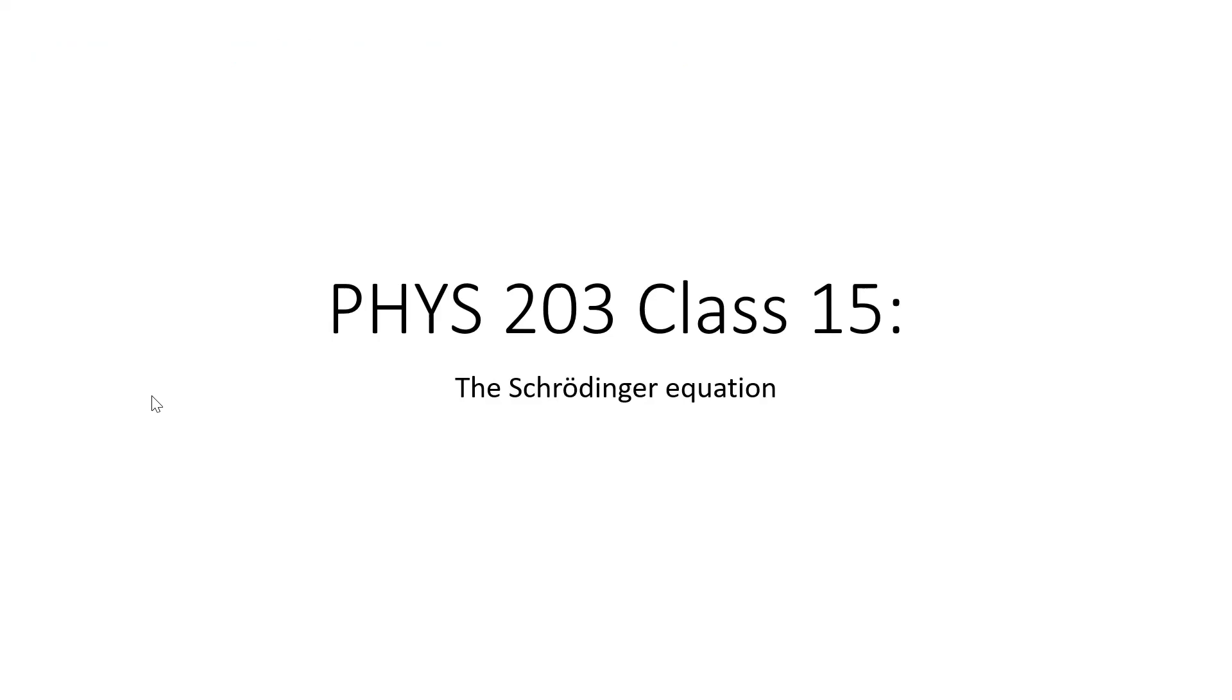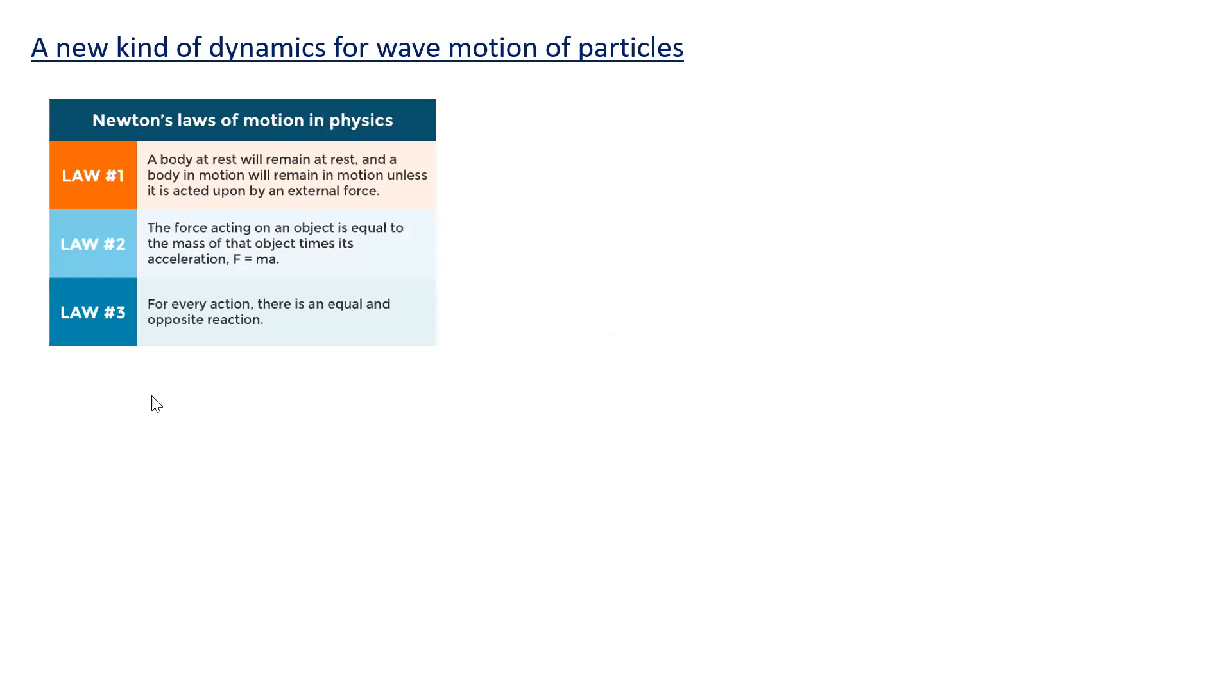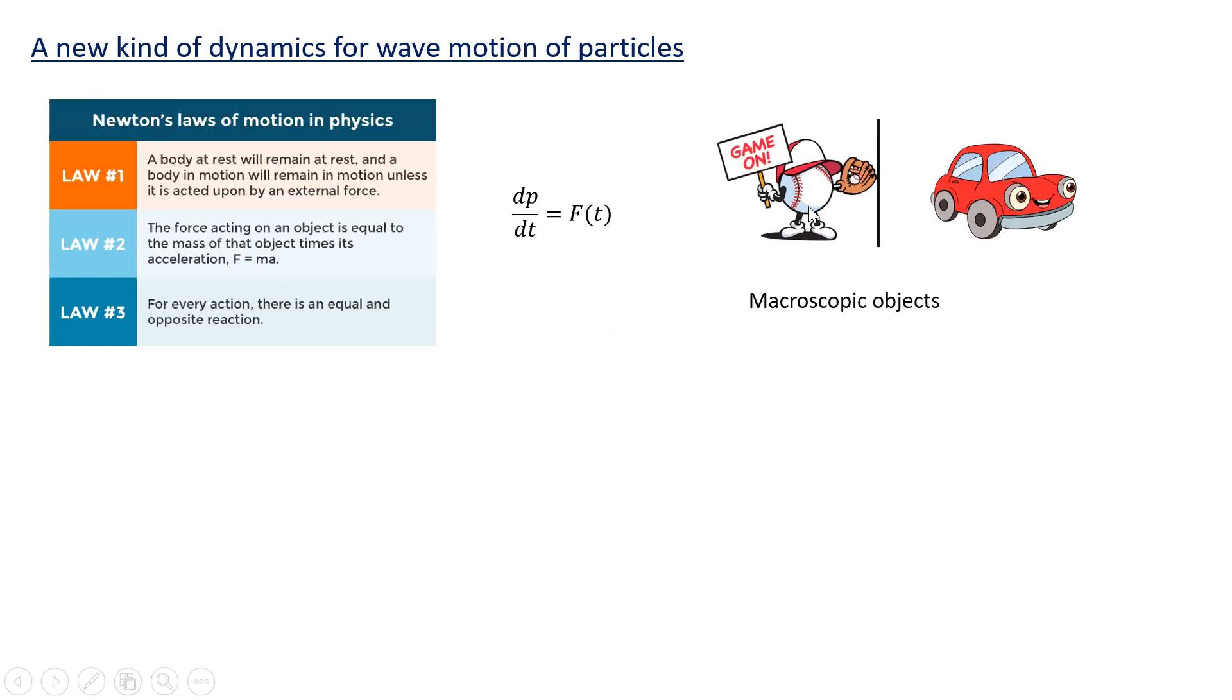So the Schrödinger equation. What we need is a new kind of dynamics for the wave motion of particles. We know in the case of classical physics, we have Newton's laws of motion, which you guys are familiar with. A body at rest will remain at rest unless acted on by an external force. The force acting on an object equals the mass times acceleration, F equals MA basically. And for every action, there's an equal and opposite reaction. Newton summarized his second law with actually saying the derivative of momentum was equal to the force, which reduces to F equals MA if the mass is constant in time. This applies very well to macroscopic objects that we're used to like baseballs or cars or planes or people, airplanes.